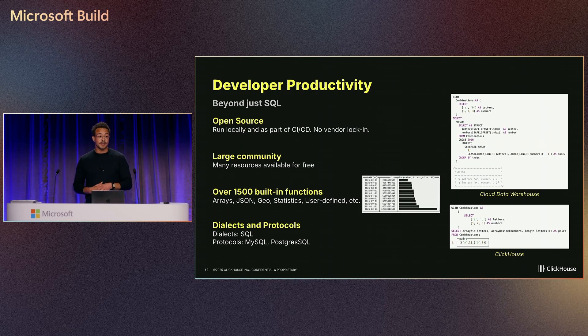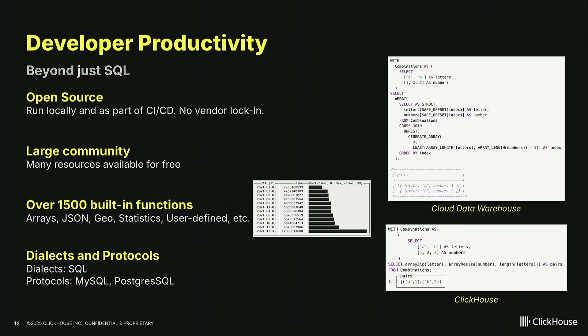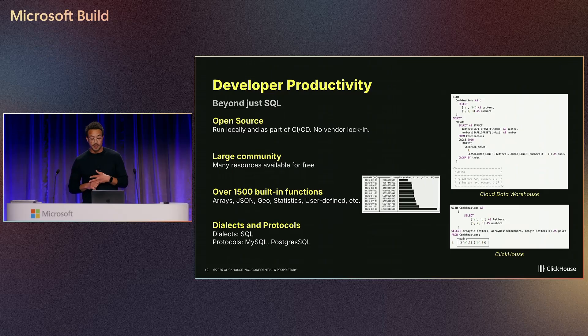In terms of developer productivity, we're a developer-first company. Because of our open-source roots, we're always thinking about the developer experience and education. You can run ClickHouse locally, integrating with your CI/CD pipeline. We also have many cool built-in functions beyond basic SQL ones — my favorite is our bar function, where you can pass in your data with a few parameters and have a bar chart for faster decision-making. We have native support for JSON, geo data types, plus user-defined functions. We've got SQL, a native protocol, and also support MySQL and Postgres SQL protocols, so we're basically supported everywhere they are.